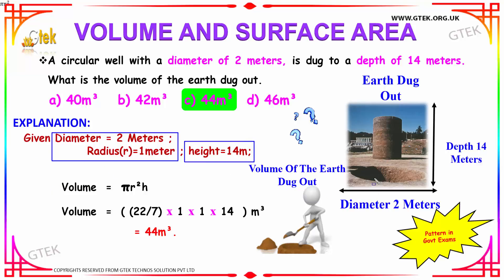To find the volume of the earth dug out, you simply have to substitute your radius and height in the formula of volume, that is πr²h. Pi has a value of 22/7. Substitute it: r is nothing but 1 meter, and h has a value of 14.